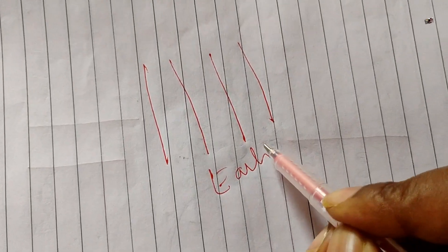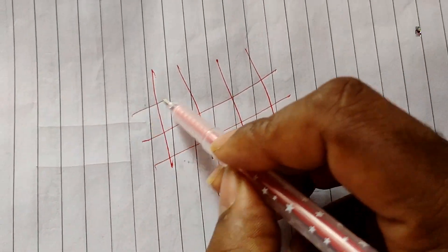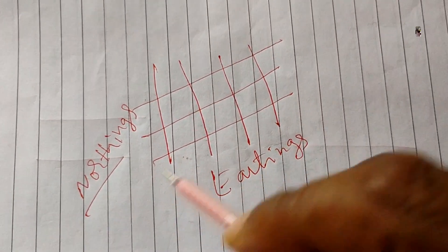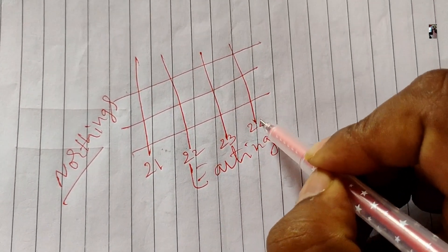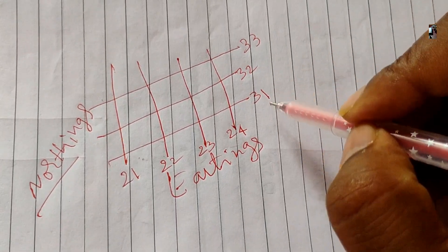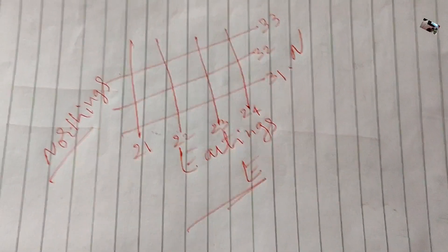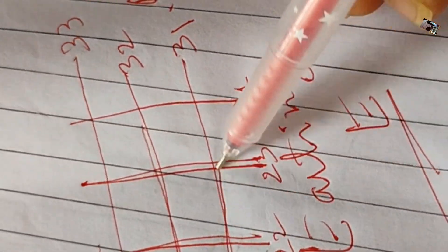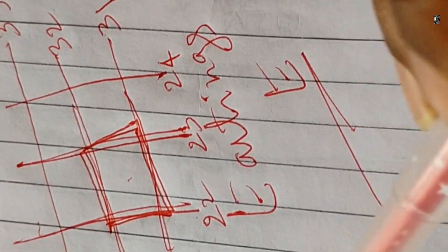Maps are divided into squares by vertical lines called eastings and horizontal lines called northings. Vertical line numbers increase as you move towards the east, and horizontal line numbers increase as you move towards the north. Each line is numbered to help us pinpoint locations. Each square on the map is defined by the intersection of vertical lines and horizontal lines.